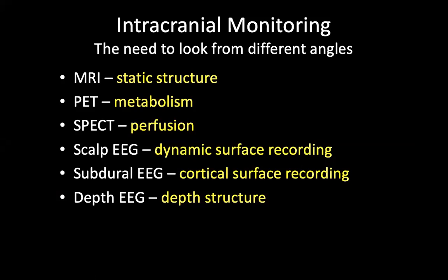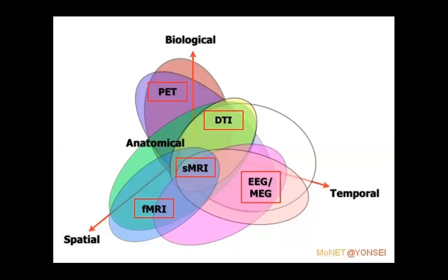Why can't we use other modalities like MRI, PET scan, SPECT, and so on? We understand that they function at different levels and stages, looking at the problem from different angles. They are not the same as intracranial monitoring, which is dynamic. PET scan is good spatially, scalp EEG is good temporally, but when we want to look at more specific areas — especially deep structures, medial structures, or deeper locations in the brain — we will need intracranial monitoring.